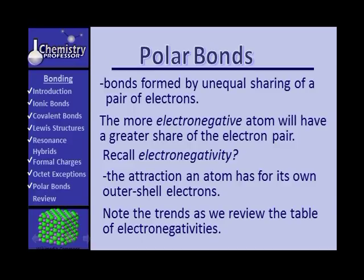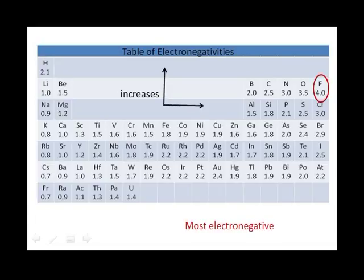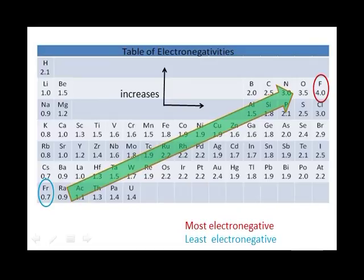Let's note trends. Let's review our table of electronegativities and look at trends. Here's the table of electronegativities. And you will recall that electronegativity increases in these directions. Fluorine was the most electronegative element. Francium was theoretically the most electropositive. So electronegativity increases in this general direction.